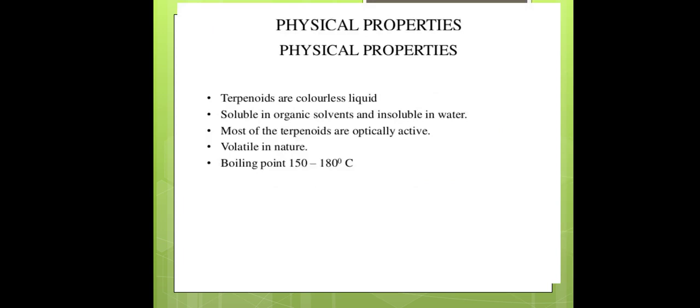The physical properties of terpenoids: terpenoids are colorless liquids, soluble in organic solvents and insoluble in water. Most terpenoids are optically active and volatile in nature. The boiling point of terpenoids is in the range of 150 to 180 degrees Celsius.